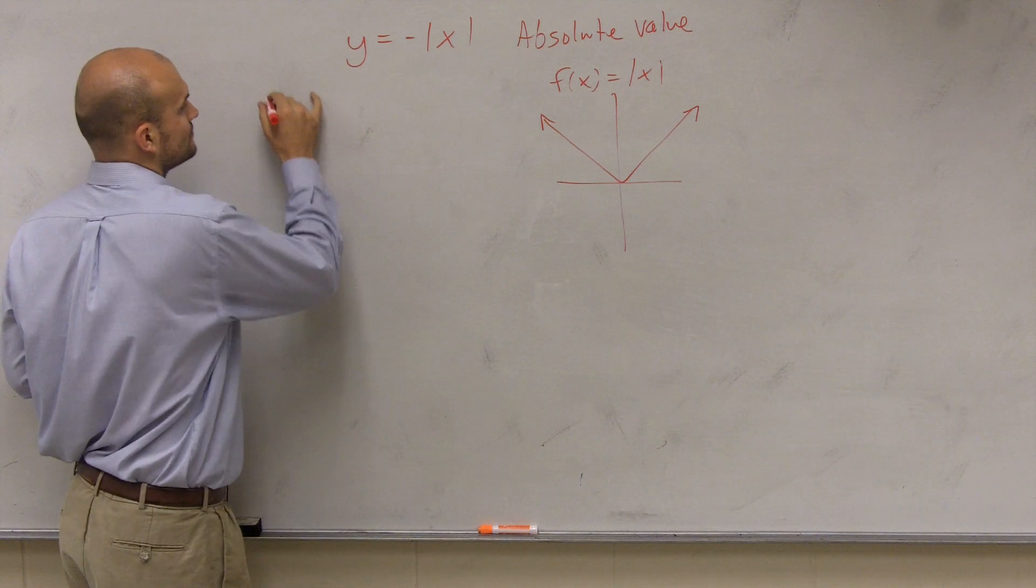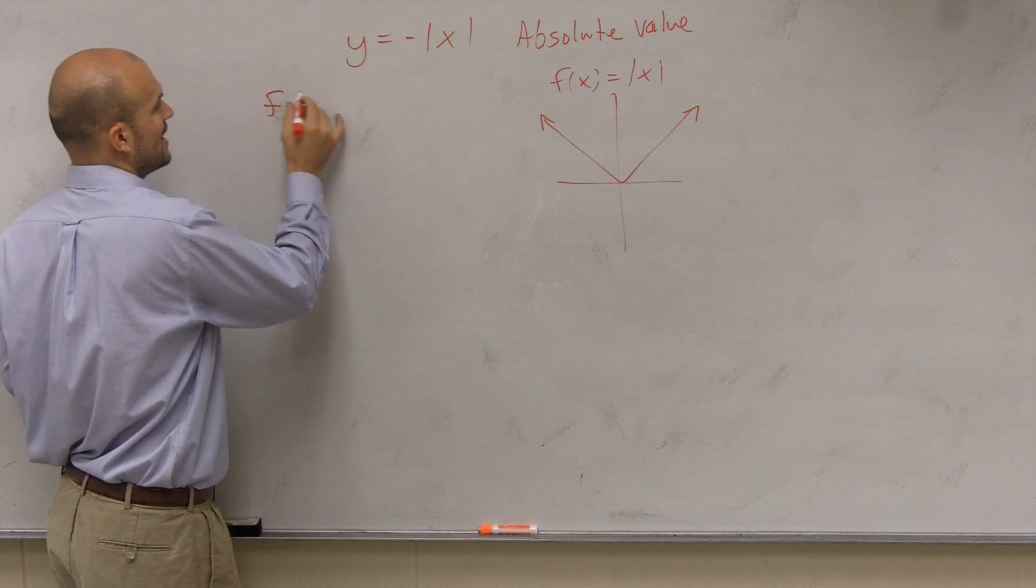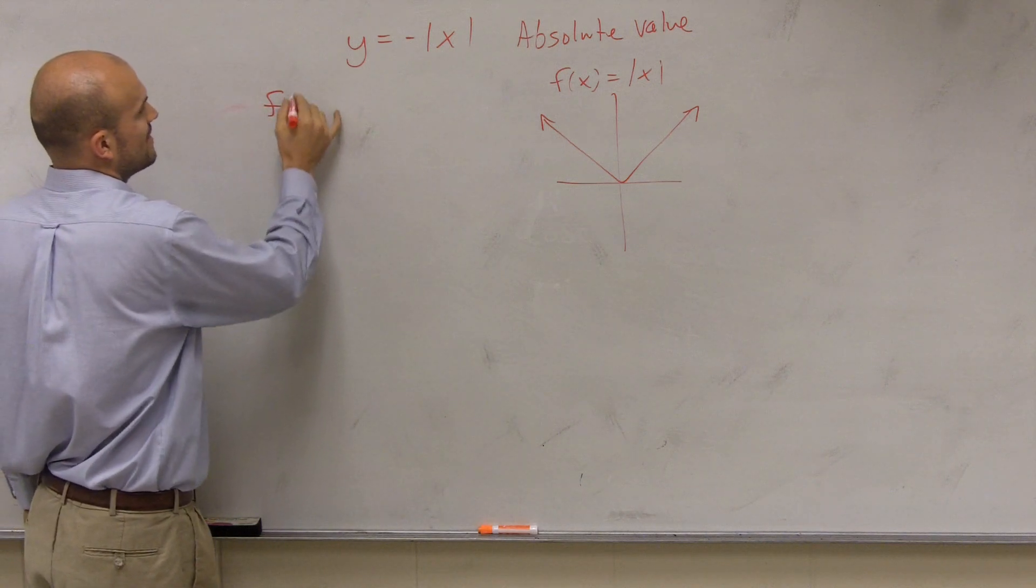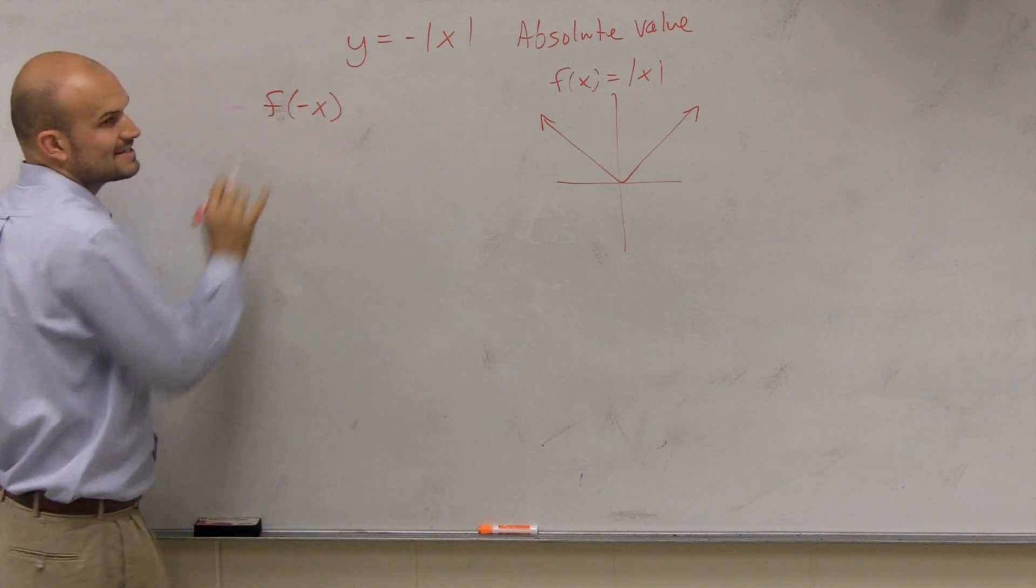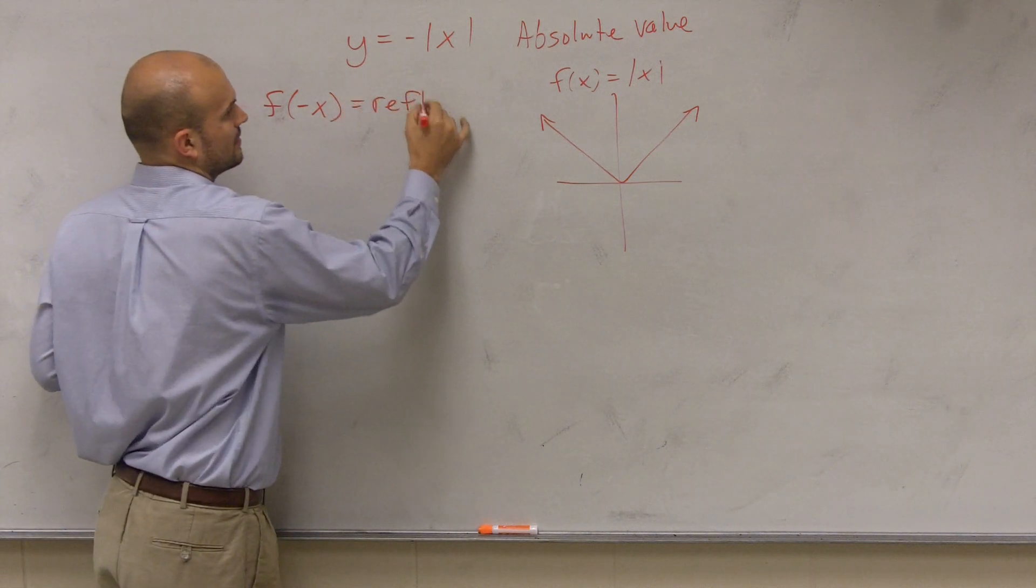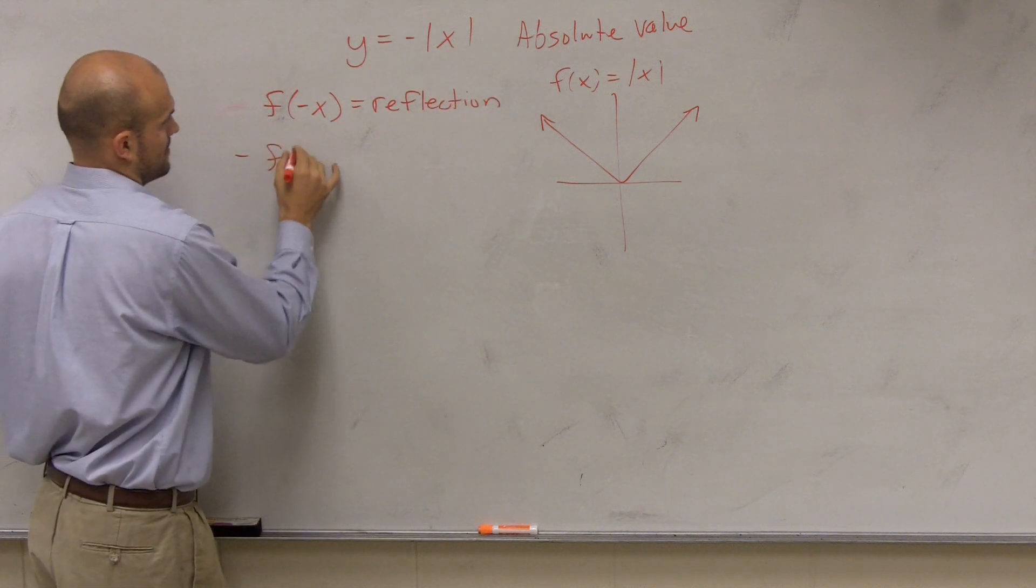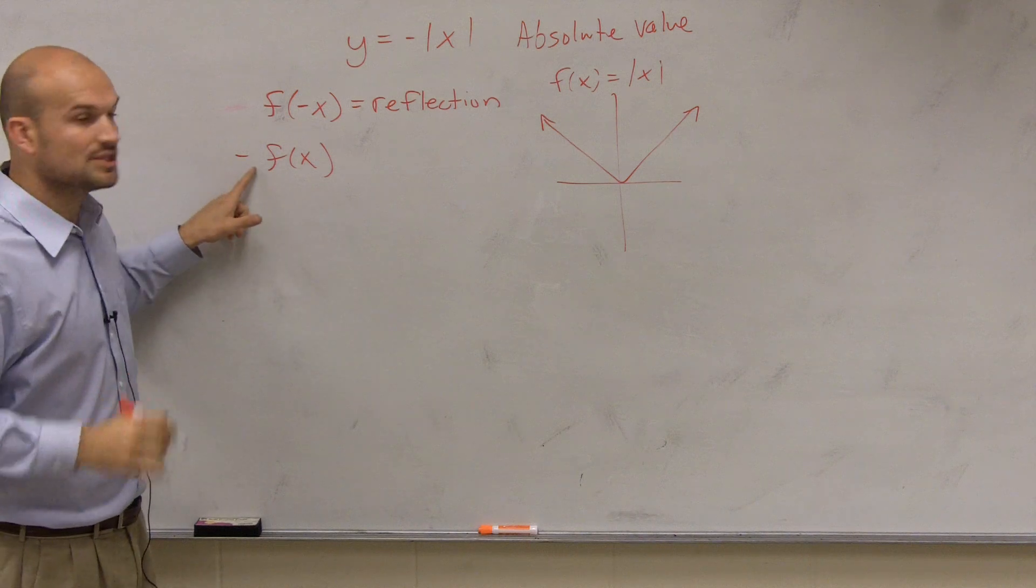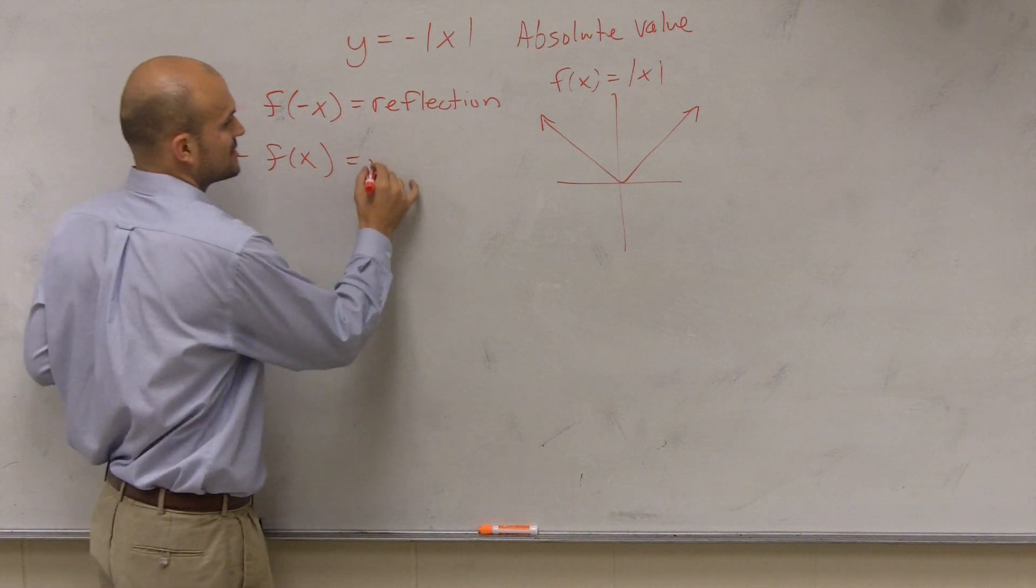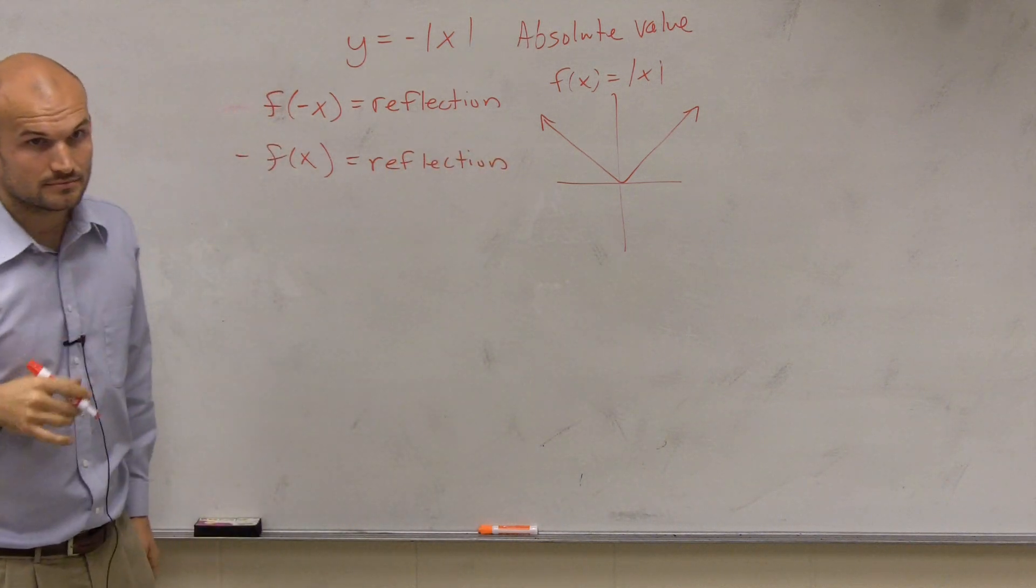So then there's two types of functions we looked at. If I take my function and I multiply inside of the function by a negative 1, that told me I was going to have a reflection.